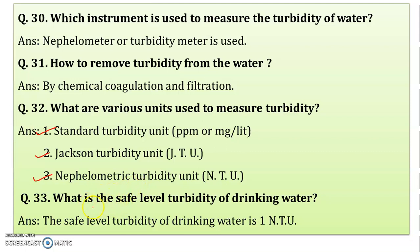What is the safe level of turbidity for drinking water? As suggested by WHO, the World Health Organization, drinking water is said to be safe if its turbidity is less than 1 NTU — nephelometric turbidity unit.